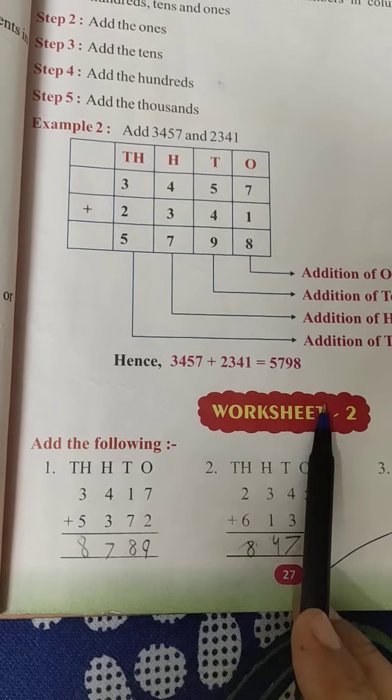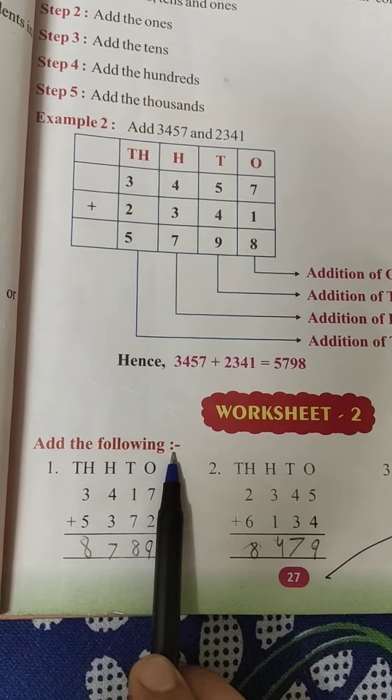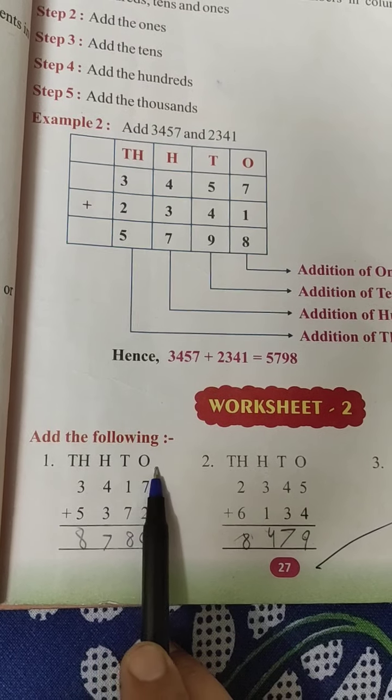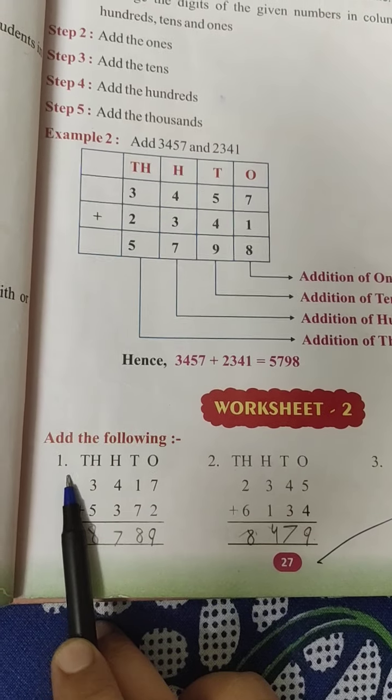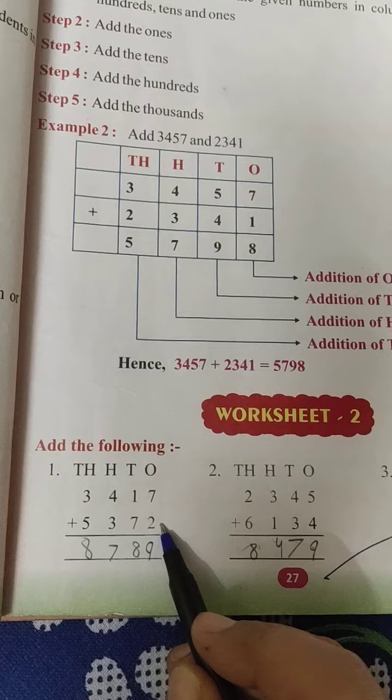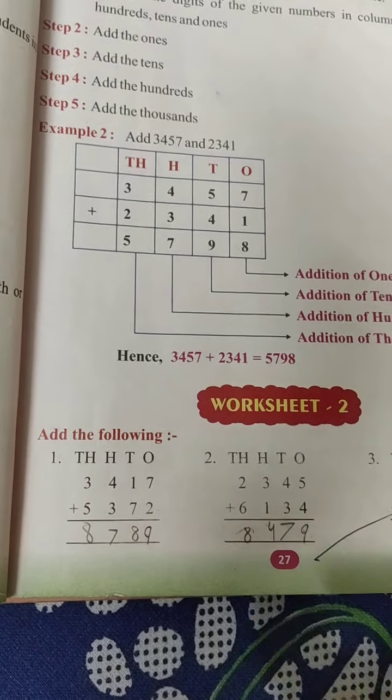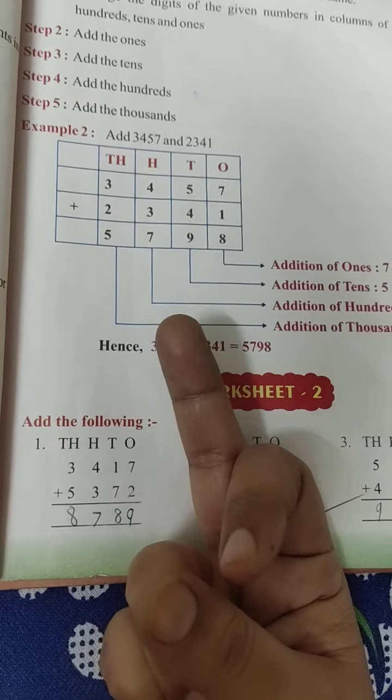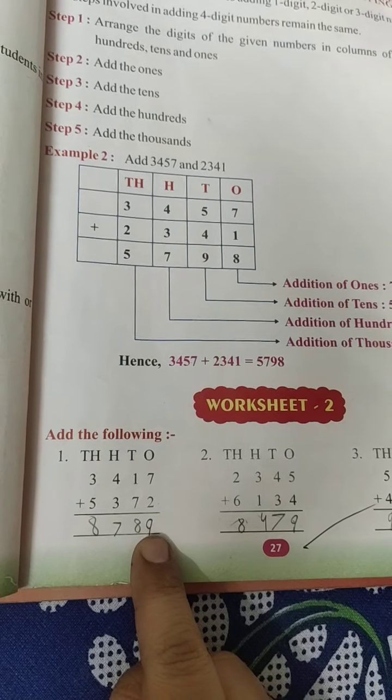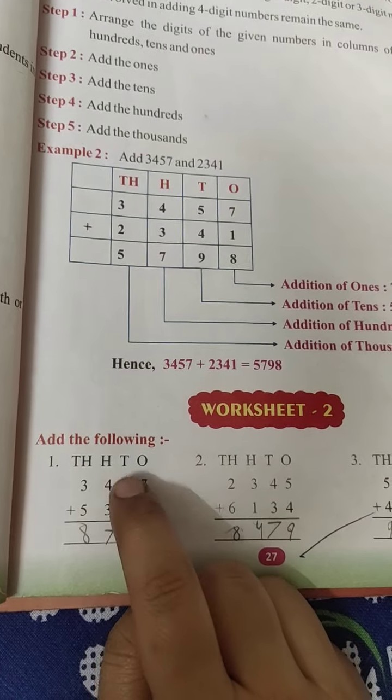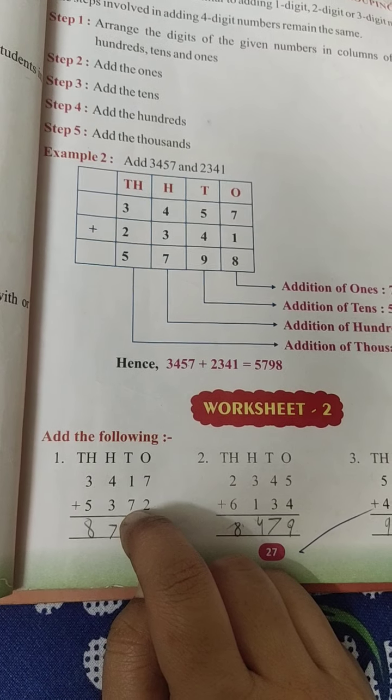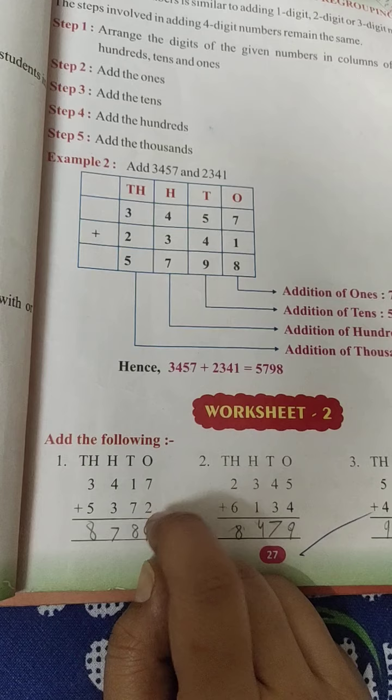See here, worksheet 2: add the following. First question is here. Thousands, hundreds, tens, ones places are given as you wrote down in notebook. 7 plus 2. Now how many fingers will you open? 2, and we will count after 7: 8, 9. So write down 9 here. After 1, you will open 7 fingers and count after 1: 2, 3, 4, 5, 6, 7, 8. Clear?